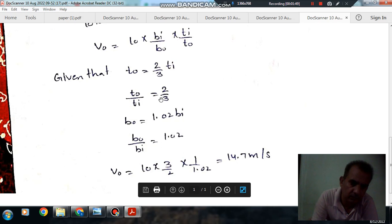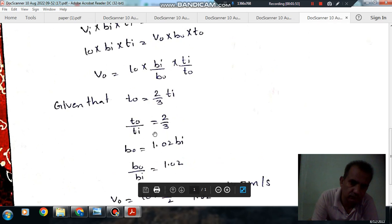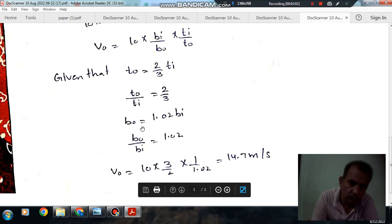So ti/t0 is 3/2, and bi/b0 is 1/1.02. The answer is 14.7 meter per second.